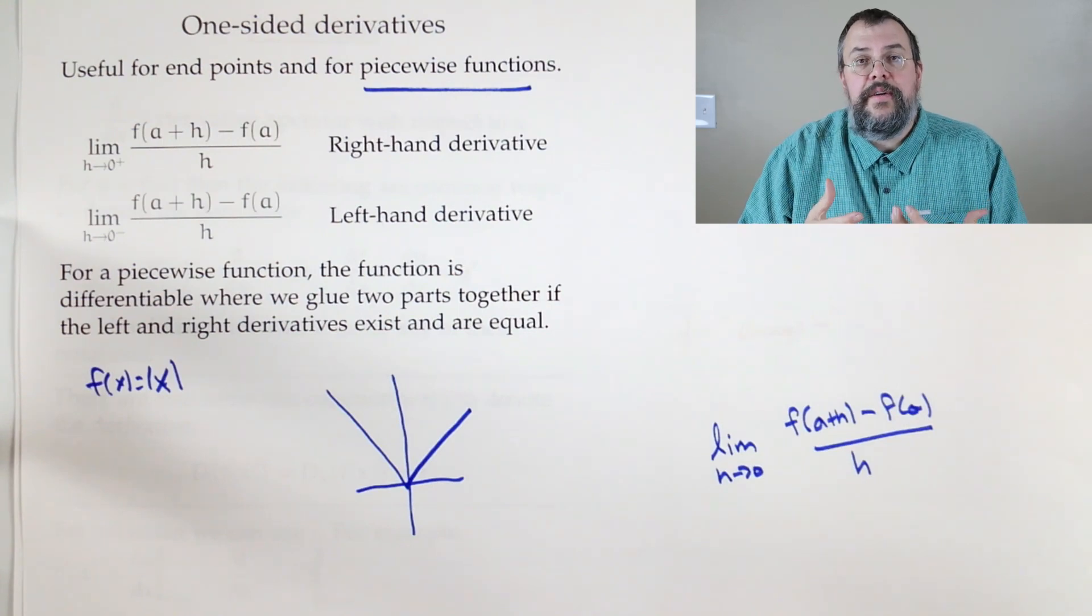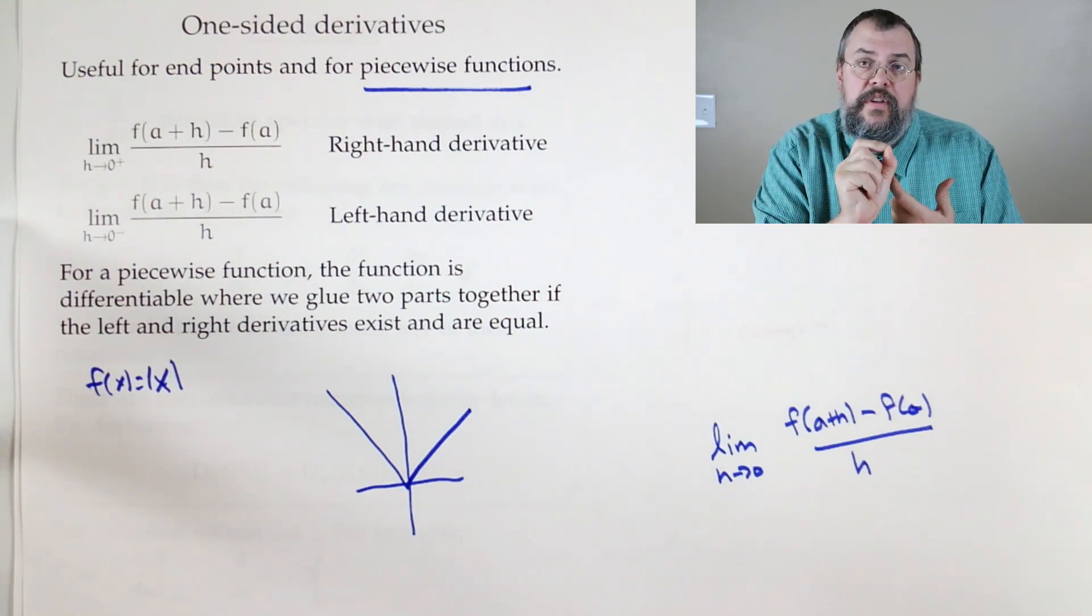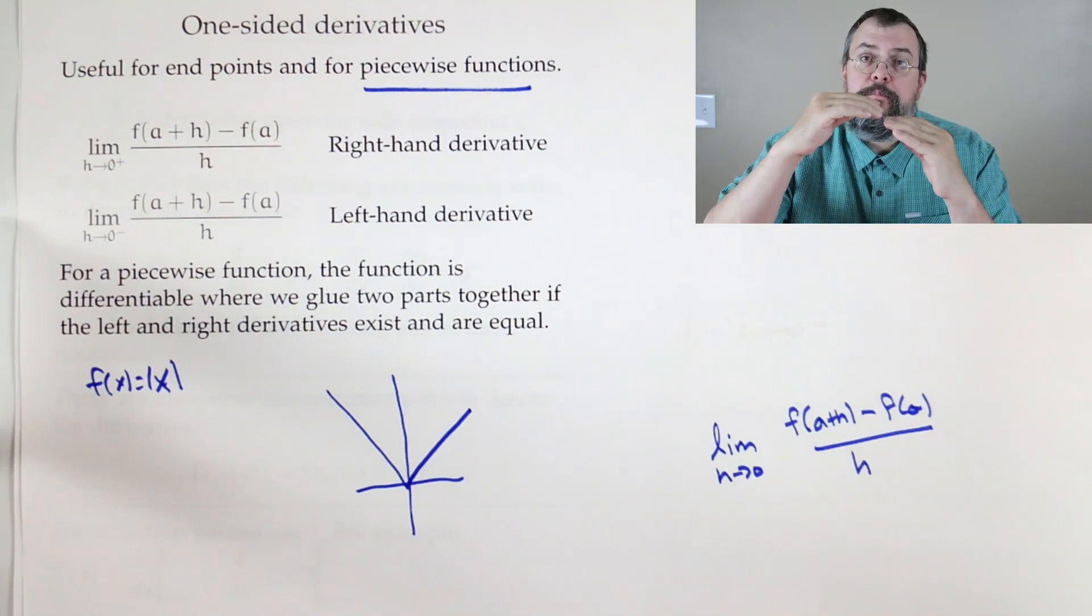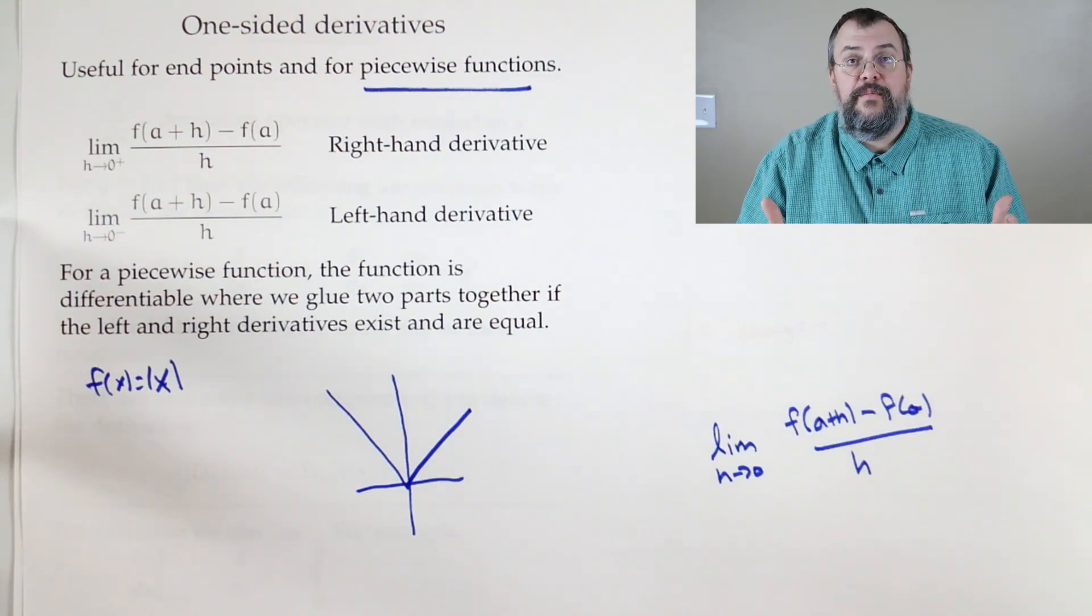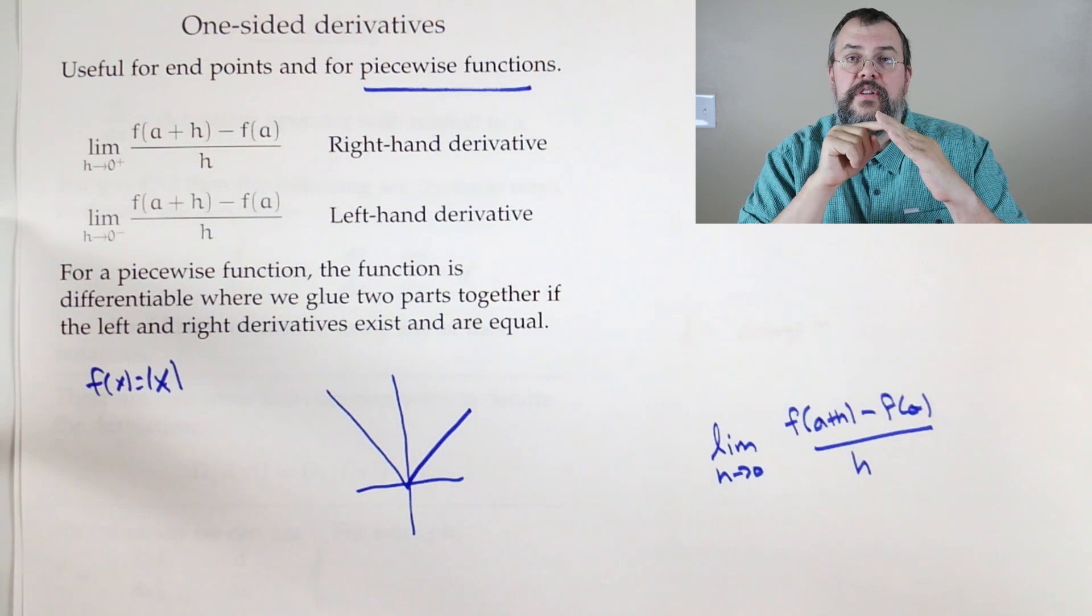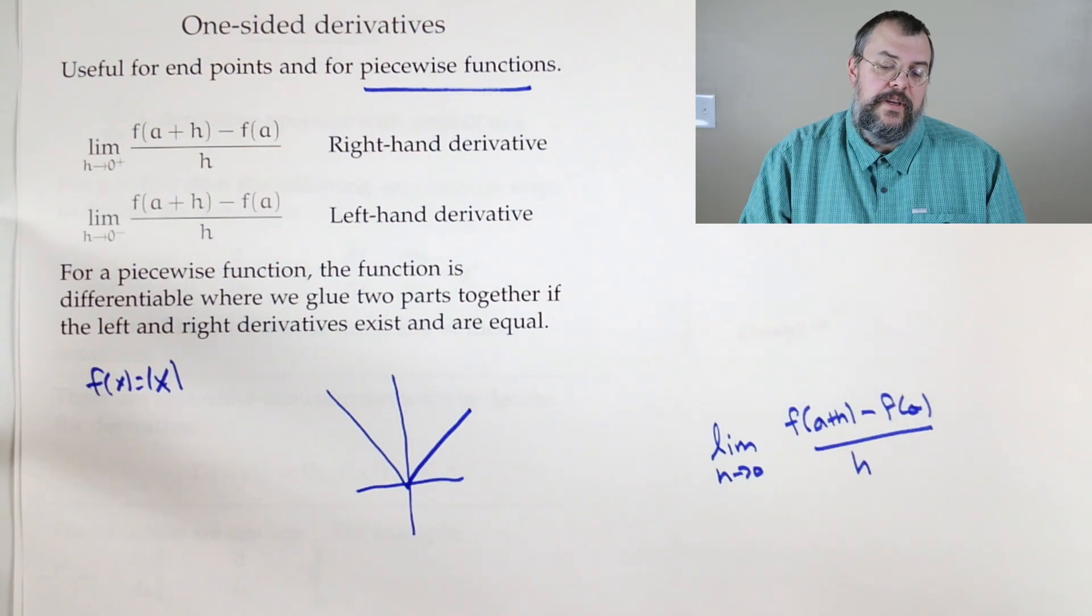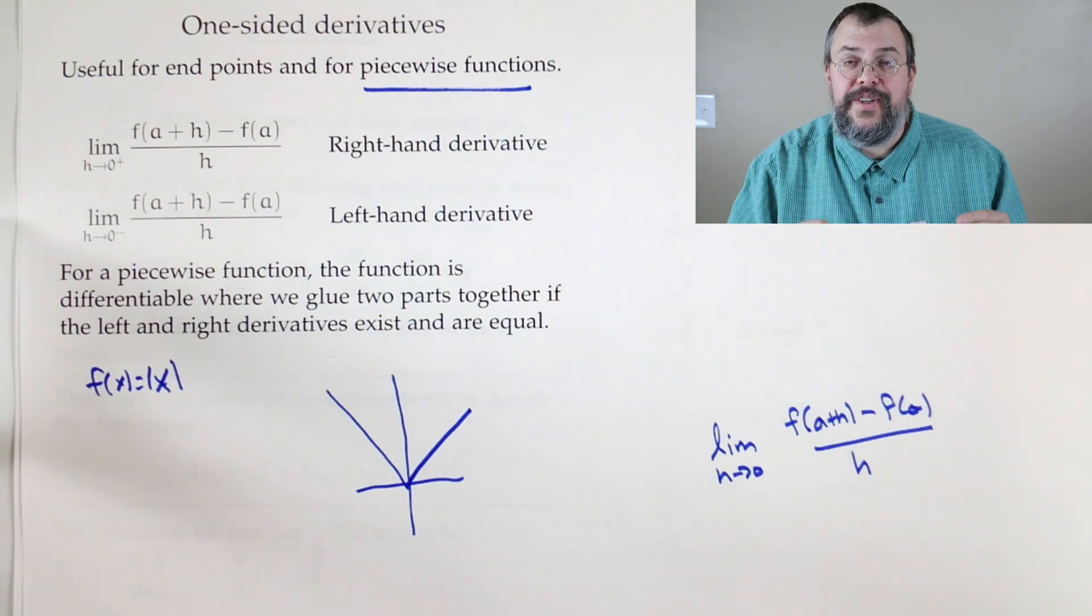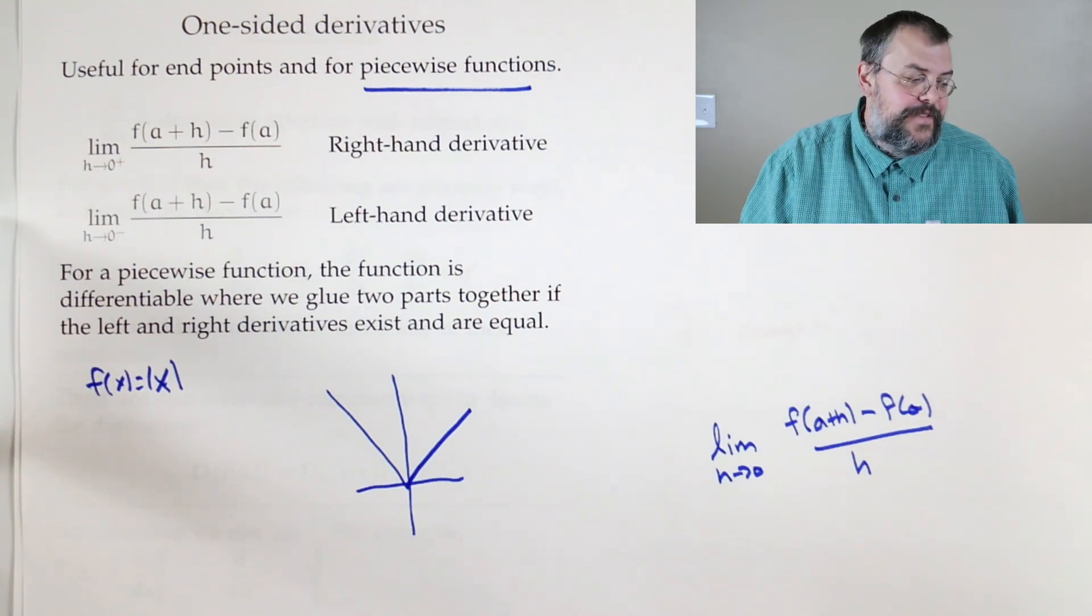So essentially, what you do is, if you have a piecewise function, you say, let me take the left hand derivative, and look at what happens at a, let me take the right hand derivative, and again, look at what happens at a. And if they line up, and the function comes together, then there's this nice, smooth transition, and it will be differentiable. But if either the function doesn't line up, or it doesn't have a smooth transition, there's a bend, then it's not differentiable. All right. So this is one way to deal with differentiable piecewise functions. Check the derivatives on both sides. If they match, the function matches, you're good to go.